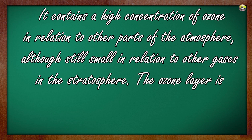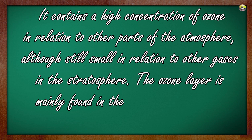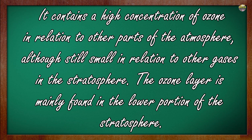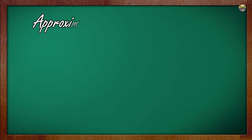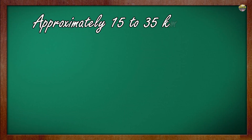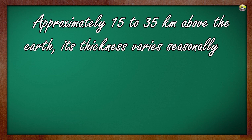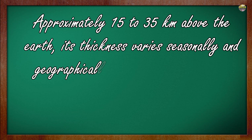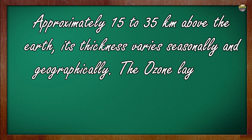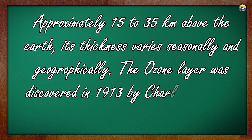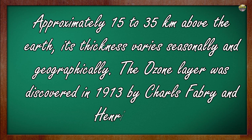The ozone layer is mainly found in the lower portion of the stratosphere, approximately 15 to 35 km above the earth. Its thickness varies seasonally and geographically. The ozone layer was discovered in 1913 by Charles Fabry and Henry Buseon.